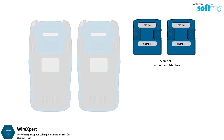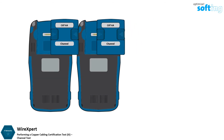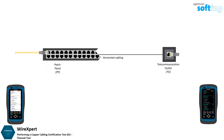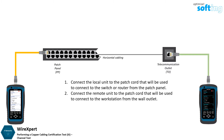To perform a channel test, insert the channel test adapters to both local and remote units of WireXpert. Connect the local unit to the patch cord that will be used to connect to the switch or router from the patch panel. Connect the remote unit to the patch cord that will be used to connect to the workstation from the wall outlet.